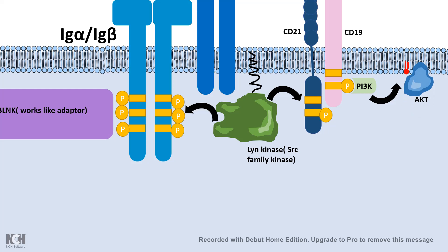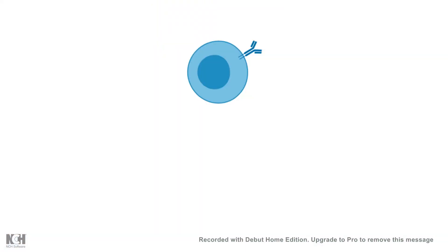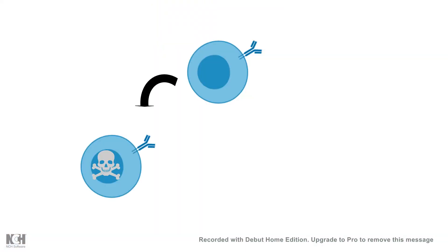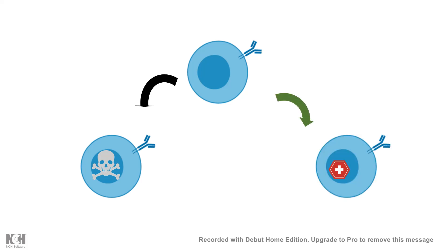AKT has widespread functions including cell survival and cell division. AKT can phosphorylate and inactivate several pro-apoptotic molecules like BAX and BAD. Thereby, the overall signaling can prevent the death of the B cell and indirectly promote B cell survival. So upon antigen binding, B cells give rise to this downstream signal allowing their proliferation, survival, and prevention of death.